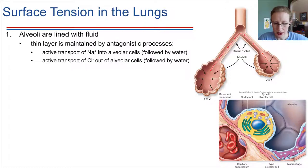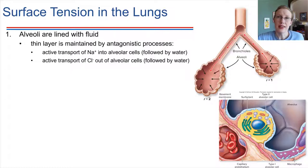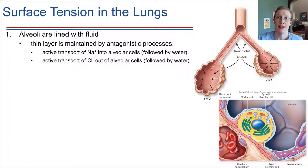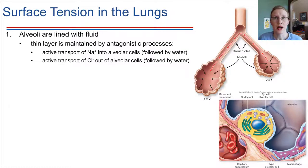If the alveolar cells need to increase how much fluid there is in the alveoli, then what they do is transport chloride ions out. Chloride ions can also be transported by active transport, which uses some energy. Then, the same thing happens — with the chloride transported outwards, water tends to go with it, flowing down that gradient. So that allows control in both directions.